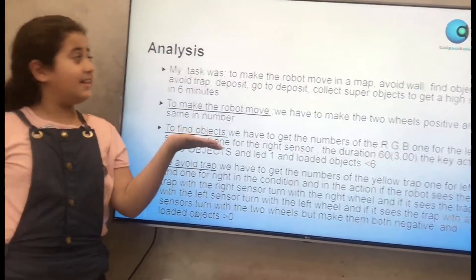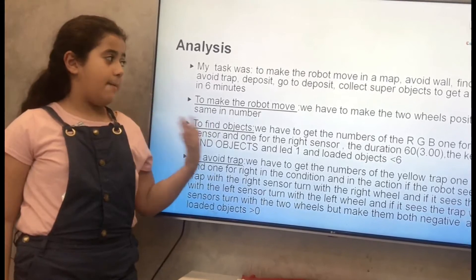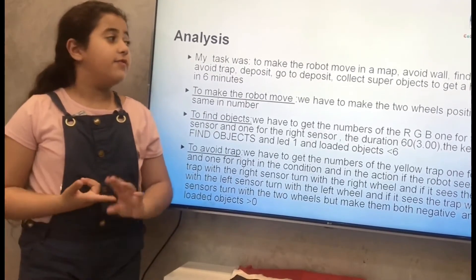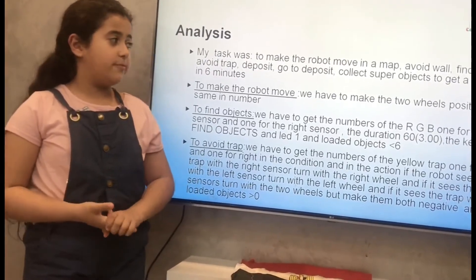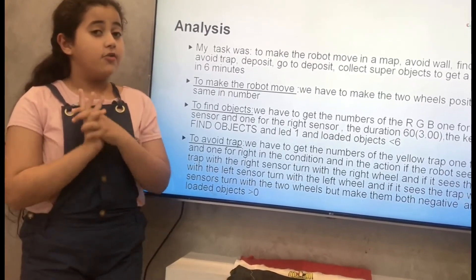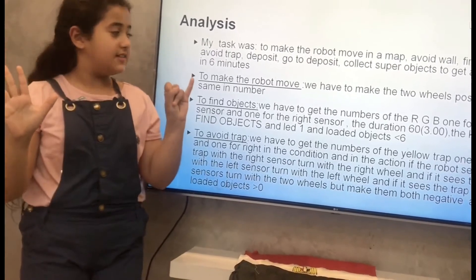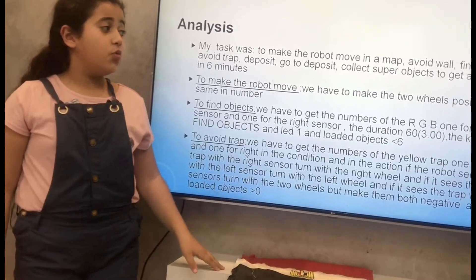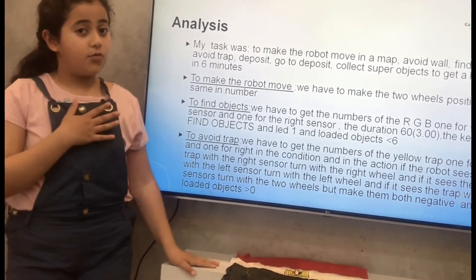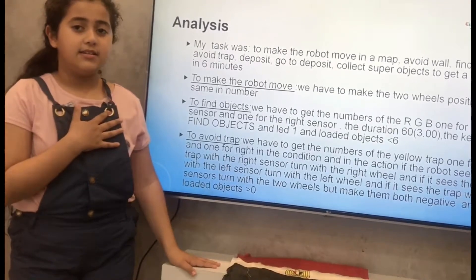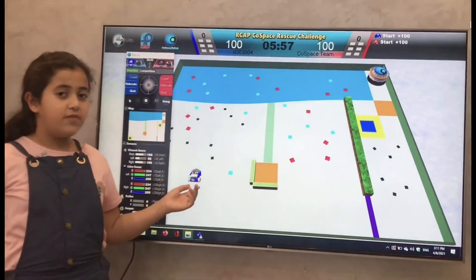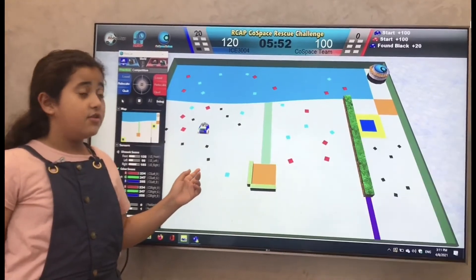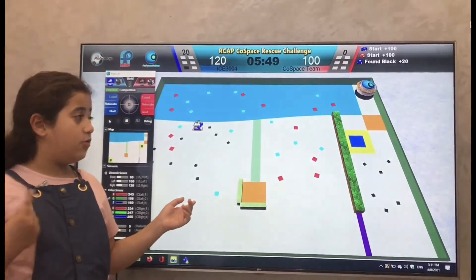There is the analysis. My tasks in the map were to make the robot move in the map, avoid walls, find objects, avoid traps, go to the deposit, collect super objects to get a high score in 6 minutes. To make the robot move we have to make the two wheels positive and in the same number — for me I made it 60. The robot is collecting black objects by making the duration 3 seconds, the key action find objects in LED 1.